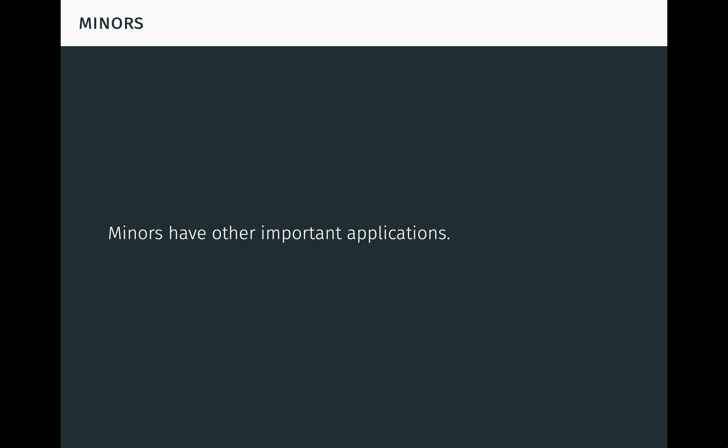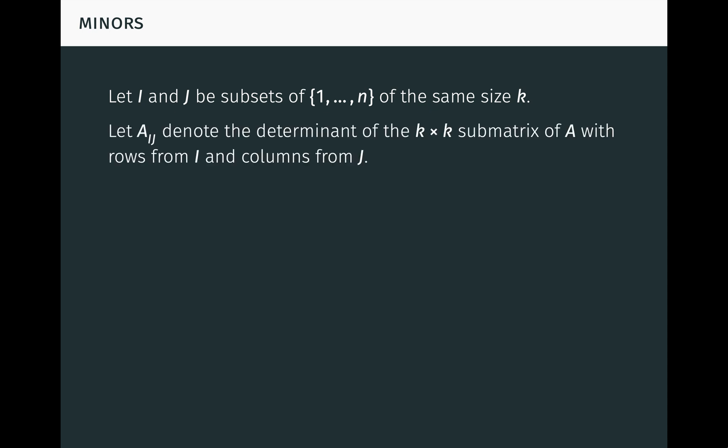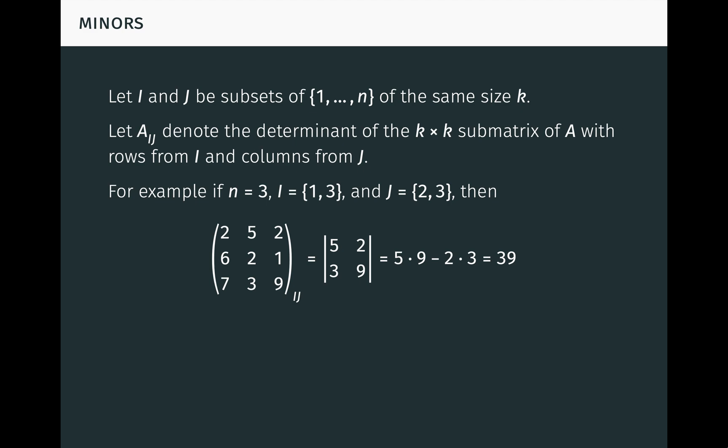Minors have other important applications in determinant theory, and for this we need a more general notion of minor. Let I and J be subsets of {1, …, n} of the same size k. Let A_{IJ} denote the determinant of the k-by-k submatrix of A with rows from I and columns from J. For example, if n equals 3, I consists of 1 and 3, and J consists of 2 and 3, we get a specific 2-by-2 determinant. A_{IJ} is called a minor of A of order k. Notice that previously we formed minors by deleting certain rows and columns, whereas now we form them by retaining certain rows and columns — these are sometimes called retainer minors, while the others are called rejector minors.